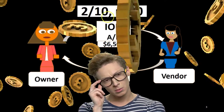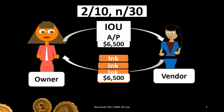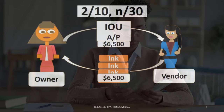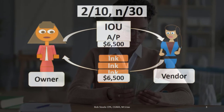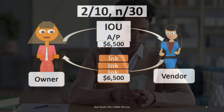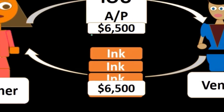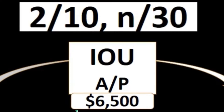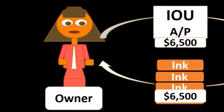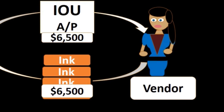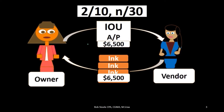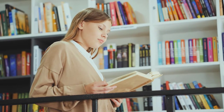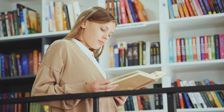Given the discount, the question is: do we plan on paying within the 10 days or after the 30 days? How should we record the $6,500 when we actually receive the goods — at the full $6,500 or at $6,500 less the 2% discount? Under the gross method, we put it on the books at the full $6,500, not taking the 2% discount at time of recording. This is the method most textbooks use when discussing cash discounts.